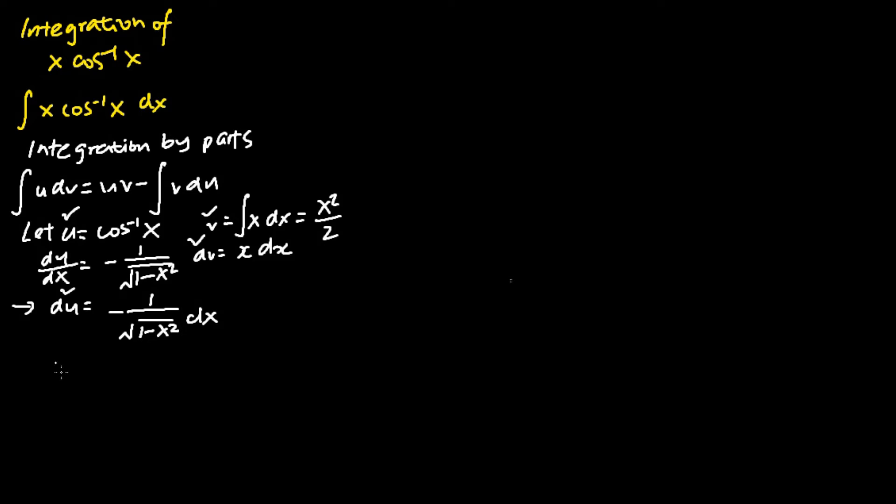I can apply the integration by parts formula to move on to the next step. So I would have the following: my u is cosine inverse x, my v is x square over 2.